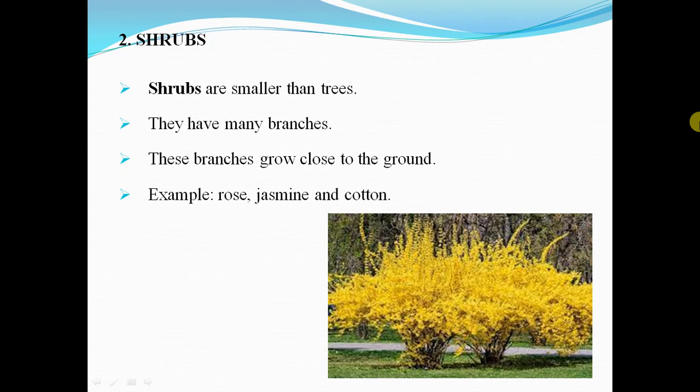Shrubs. Shrubs are smaller than trees. They have many branches, and these branches grow close to the ground. Examples are rose, jasmine, and cotton. You can see in this picture — there are many branches and they are smaller.